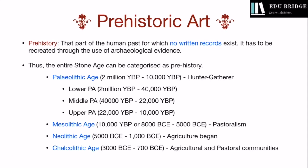Let us begin with the definition of prehistory. Prehistory refers to that part of the human past for which no written records exist. During this period, human beings did not have the knowledge and skill of writing. Thus, this period has to be recreated through the use of exclusively archaeological evidence. Writing skill came to India during the Harappan civilization.